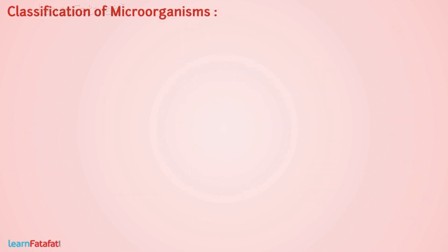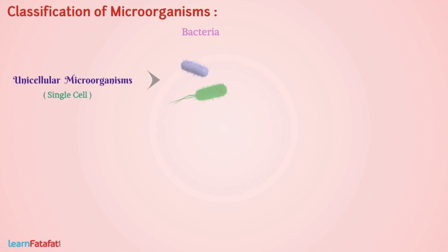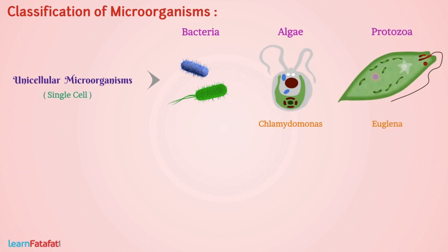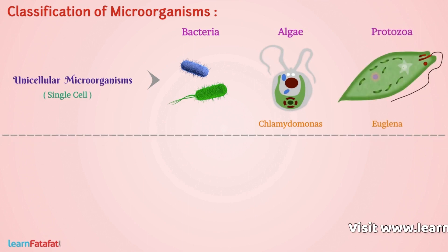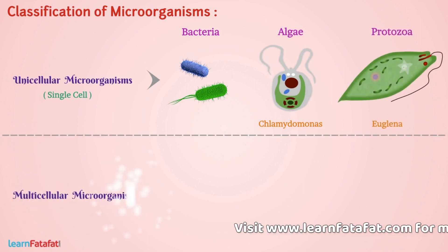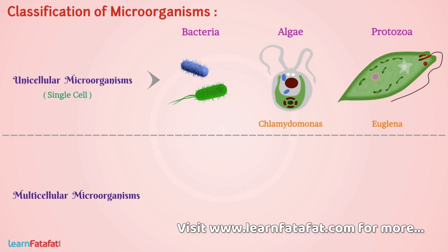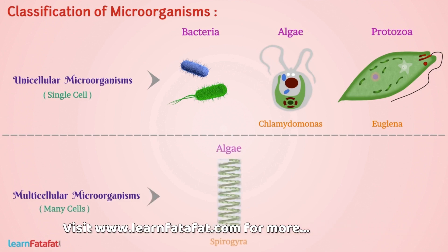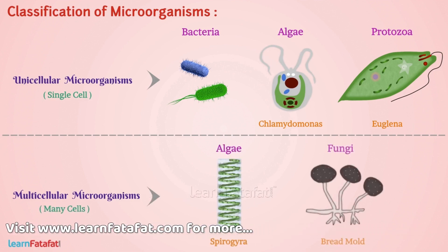Based on structure, microorganisms could be unicellular — consisting of a single cell, like in bacteria, some algae and protozoa — or multicellular — consisting of many cells, like algae and fungi.